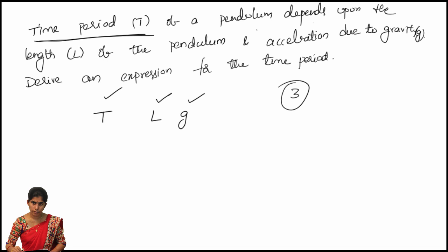Up to 4 variables, we can use Rayleigh's method, and since we have 3 variables, we can solve this problem using Rayleigh's method. The basic equation is: if X is a dependent variable that depends upon X1, X2, X3, then X is equal to constant K multiplied by X1 power A, multiplied by X2 power B, multiplied by X3 power C.